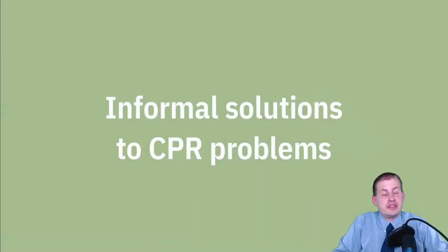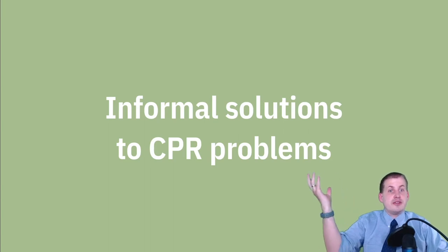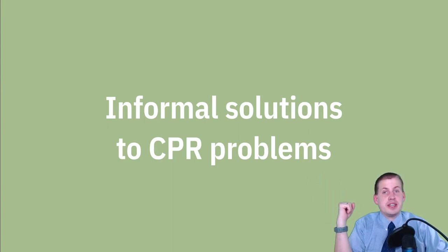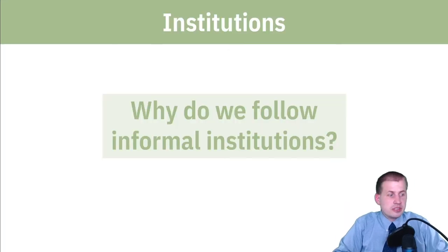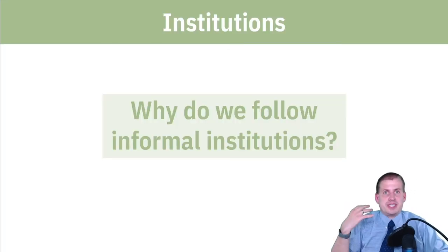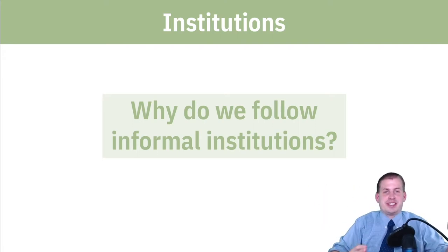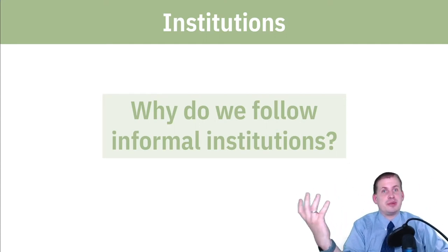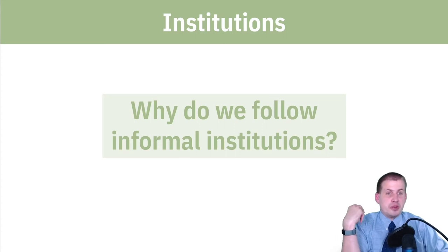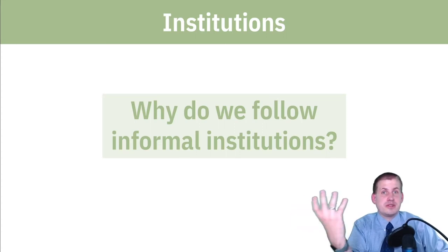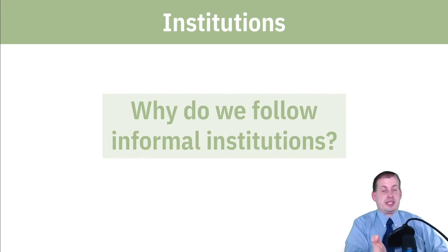The third way of fixing common pool resource issues, rather than using the private or public sector, is to rely on informal solutions or informal institutions. Institutions are important — hopefully that's one thing you'll remember from this class beyond supply and demand. Institutions shape our behavior and the incentives we face. We follow informal institutions even though they're not written down because it's in our best interest to do so.